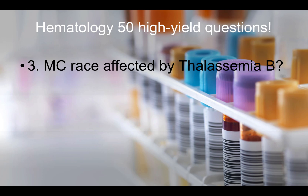Question number three: What is the most common race affected by thalassemia B? B is for Mediterranean.